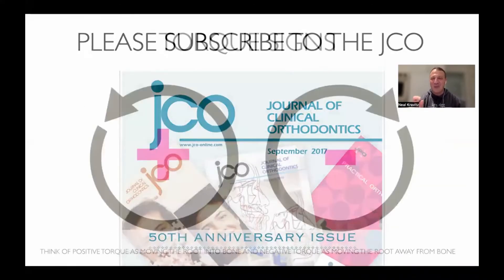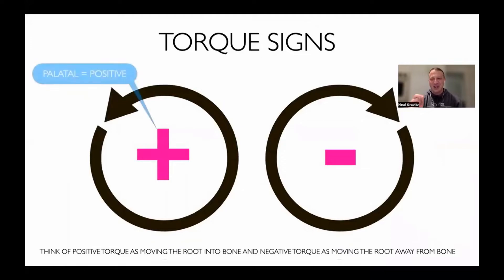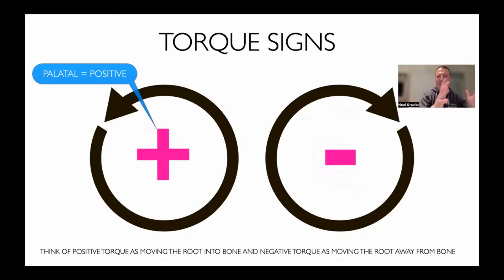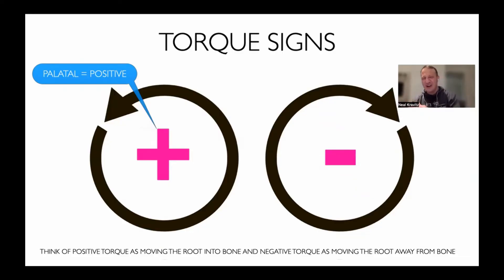Before we get started, I want to review torque values. Positive torque means palatal root torque, and negative torque means labial root torque. Think of positive torque as moving those roots back onto bone, and negative torque values as moving those roots off of bone.